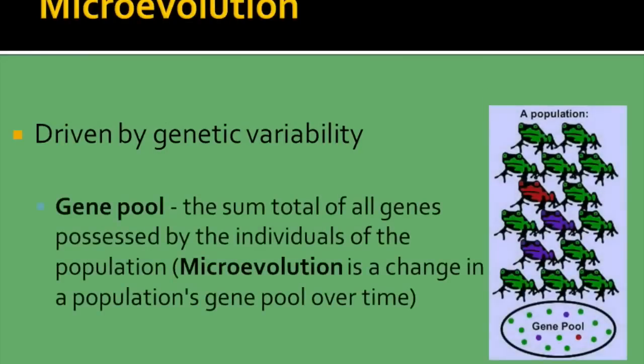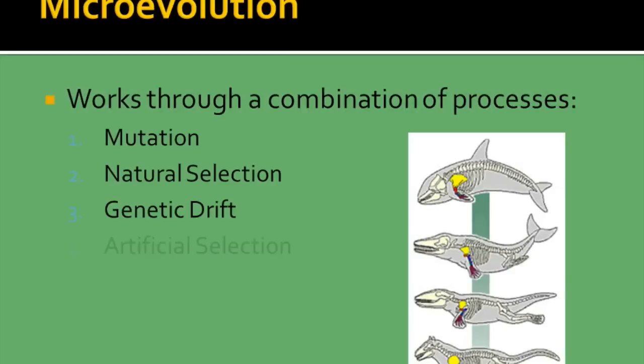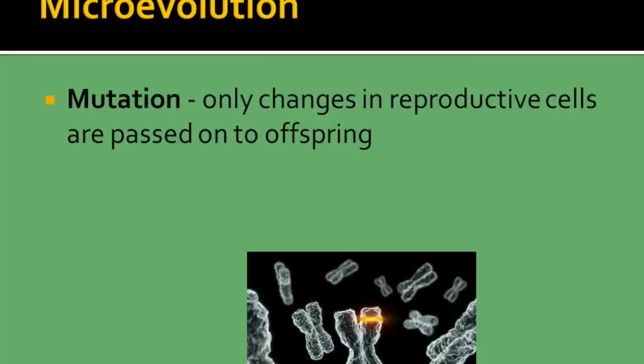Microevolution is driven by genetic variability. A gene pool is all of the genes possessed by the individuals of a population together. Microevolution looks at the change in the population's gene pool over a specific period of time. Changes happen through one of five things: mutation, natural selection, genetic drift, artificial selection, or coevolution.